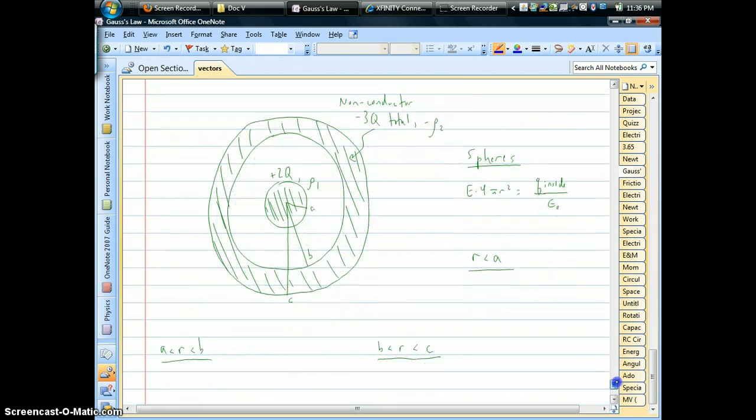So here's a pretty typical example. We're going to have two different charge densities, one for that interval with a positive charge. And then this shell is going to have a negative rho, a negative charge density, negative 3q total.